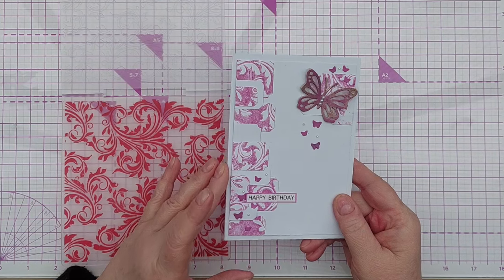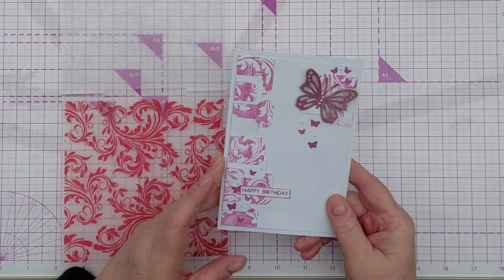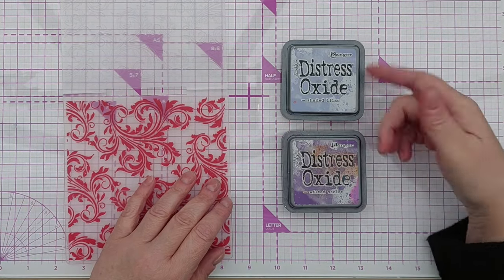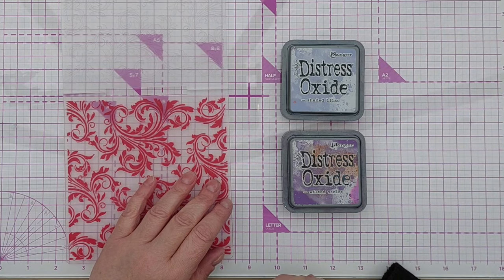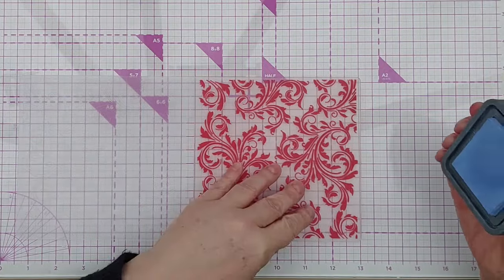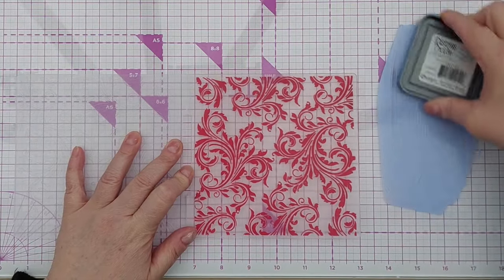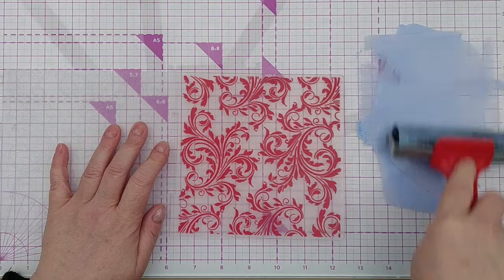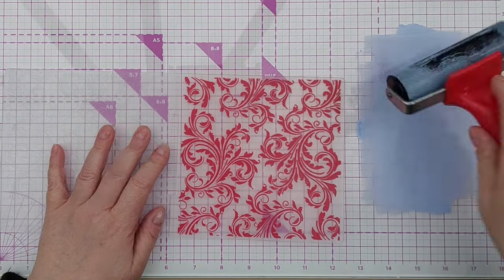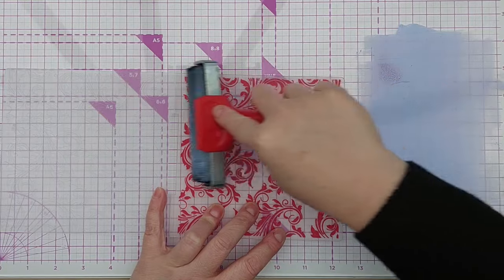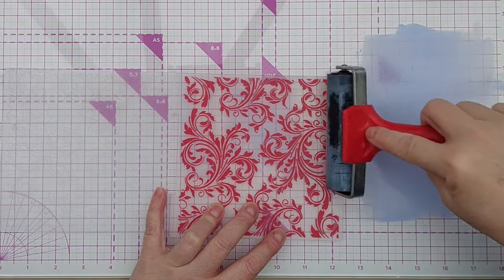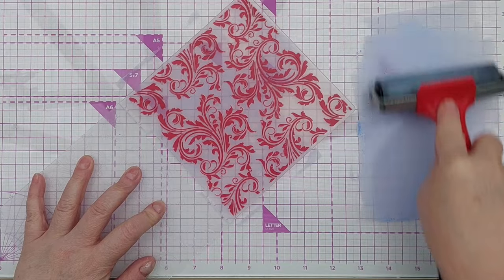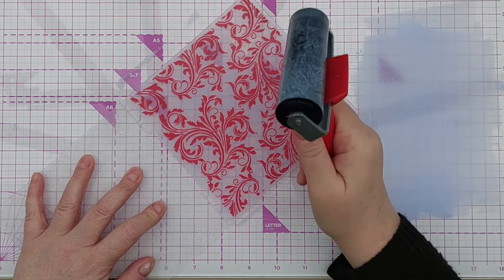On this card I used one ink color, seedless preserves distress oxide, but on today's card I'm going to use shaded lilac and wilted violet. Shaded lilac I think is more or less a lighter version of wilted violet. So on this side of my embossing folder I'm going to add some shaded lilac ink and I'm going to do that with my brayer. I'm going to load up my brayer so it's nice and inky and then roll over this side of my embossing folder, and this is the side where you get the background raised.